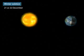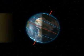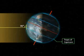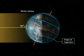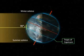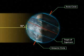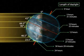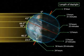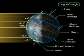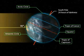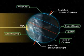Winter solstice. On the 21st and 22nd of December, the overhead Sun is over the Tropic of Capricorn. It receives the largest amount of solar radiation. On this day, the Northern Hemisphere is in the winter solstice, while the Southern Hemisphere is in the summer solstice. The angle of the Sun decreases towards the poles. The length of daytime in the Northern Hemisphere is the shortest in the year, while that of the Southern Hemisphere is the longest. There are 24 hours of darkness at the Arctic Circle and 24 hours of daylight at the Antarctic Circle.